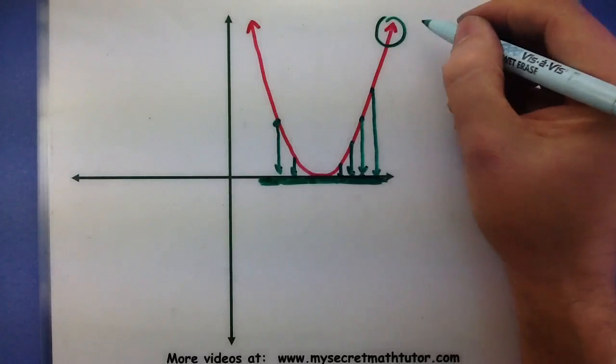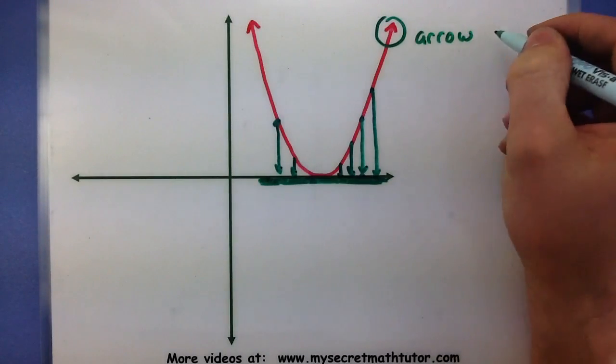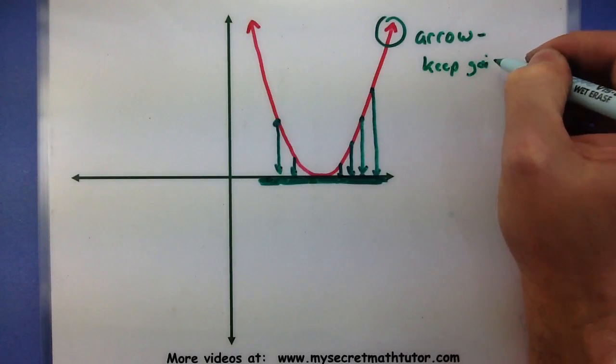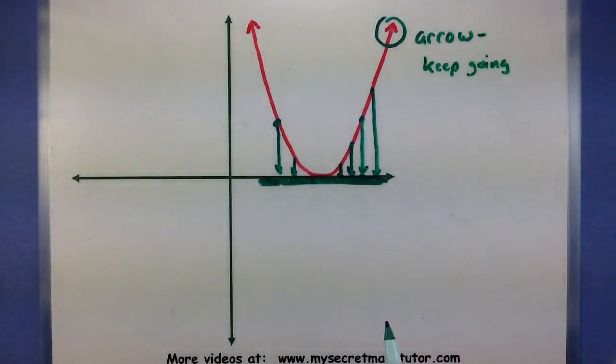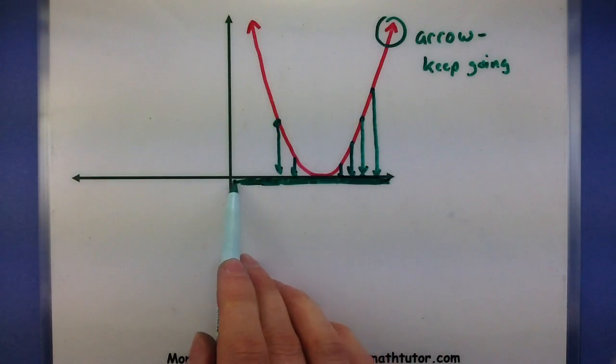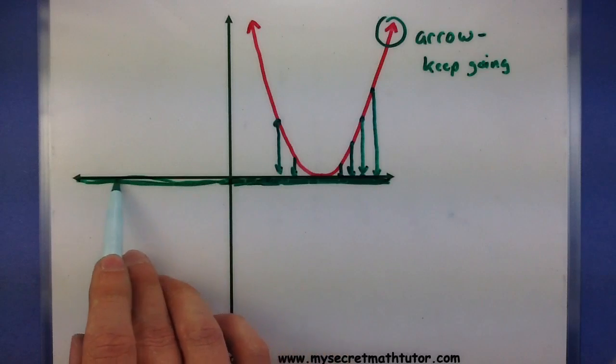Watch out for things like arrows, which means that the graph continues on. As I go to shade in more and more values, you can see that I could potentially shade in the entire x-axis.